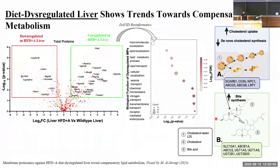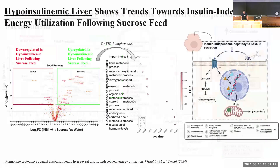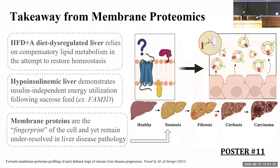Assessing the most differentially regulated membrane proteins in the high-fat, high-alcohol dysregulated liver, we noted marked trends towards increased cholesterol uptake, increased bile acid synthesis, and decreased de novo cholesterol synthesis — all combating the high-fat, high-alcohol diet. Performing the same analysis on the hypoinsulinemic liver, we noted marked trends towards energy utilization. FAM3D, one of the most upregulated membrane proteins in our dataset, governs the metabolic shift from energy storage to energy utilization in an insulin-independent fashion. We were able to show at the membrane proteome level that the high-fat, high-alcohol diet dysregulated liver relies on compensatory lipid metabolism to restore homeostasis, whereas the hypoinsulinemic liver shows a marked trend towards insulin-independent energy utilization.